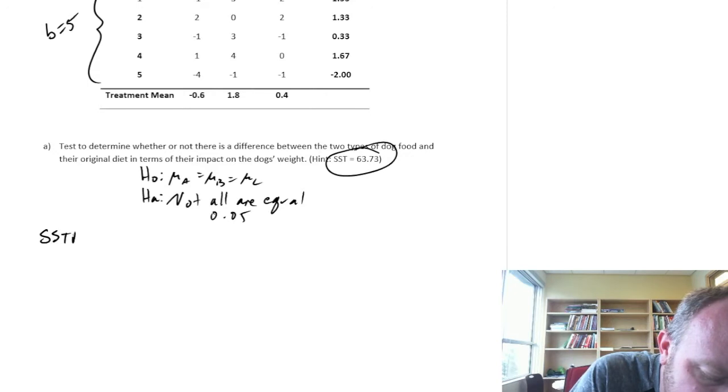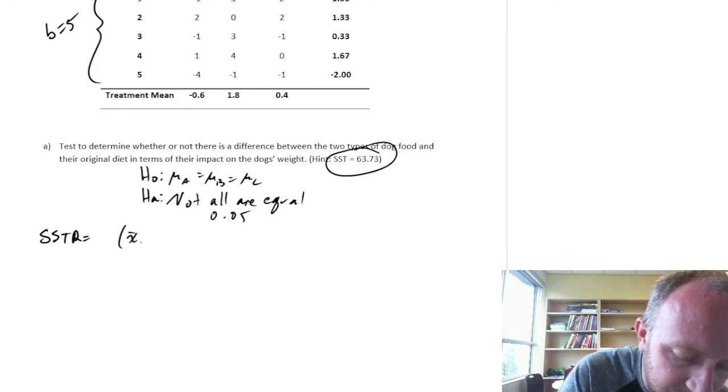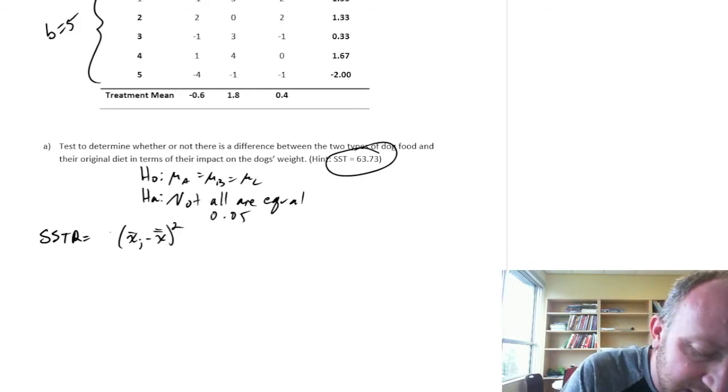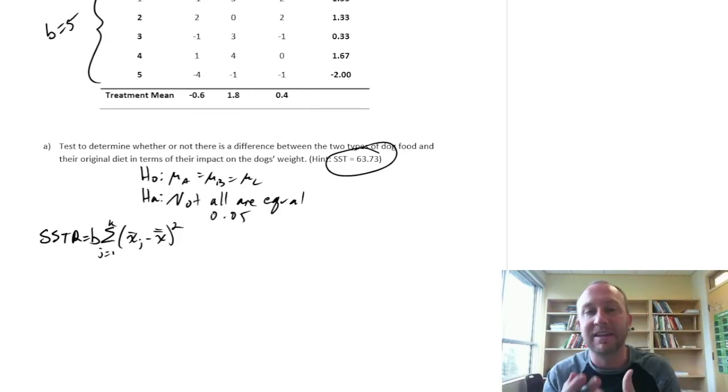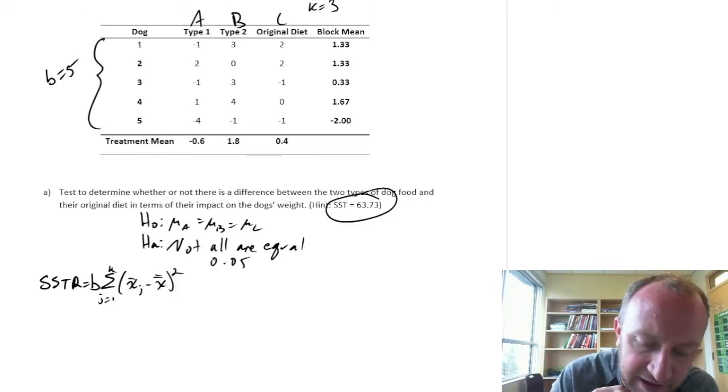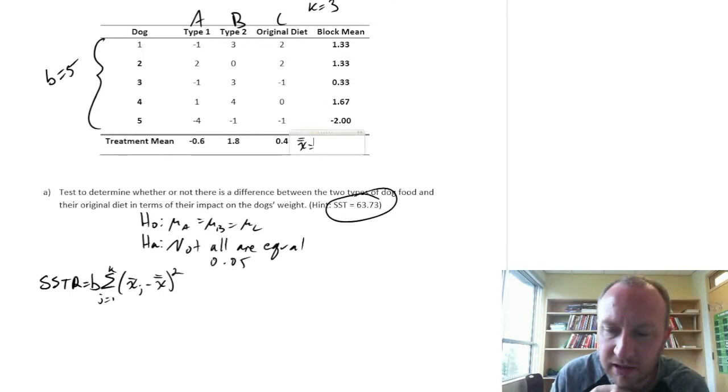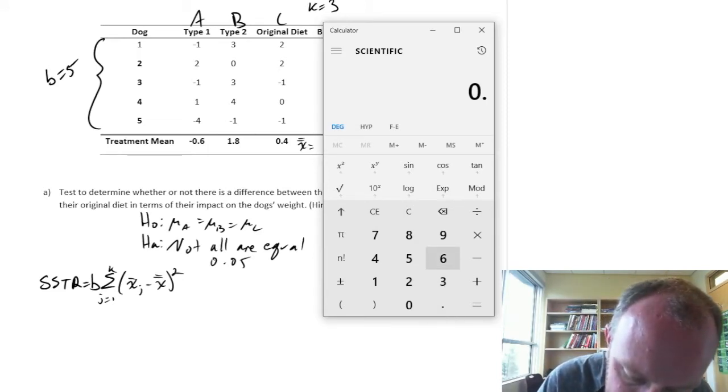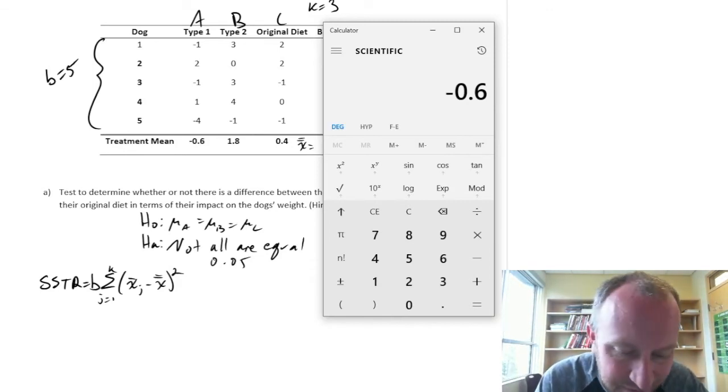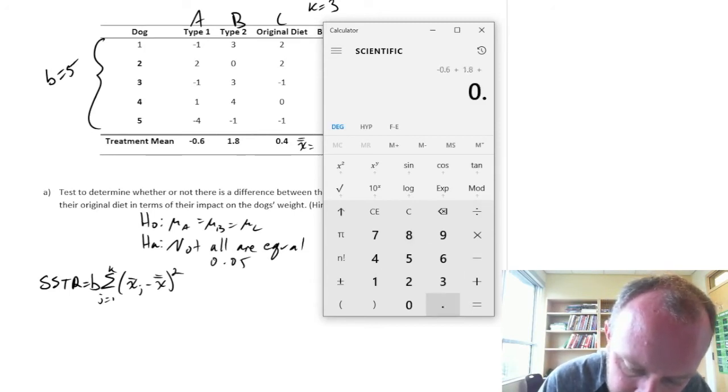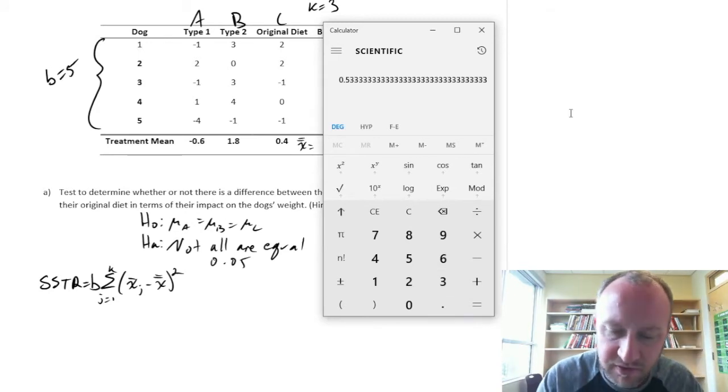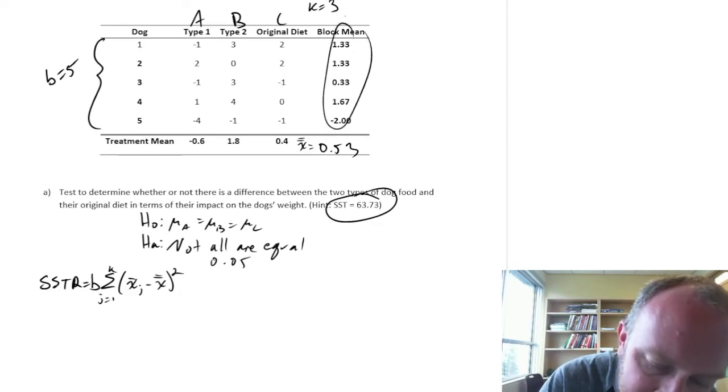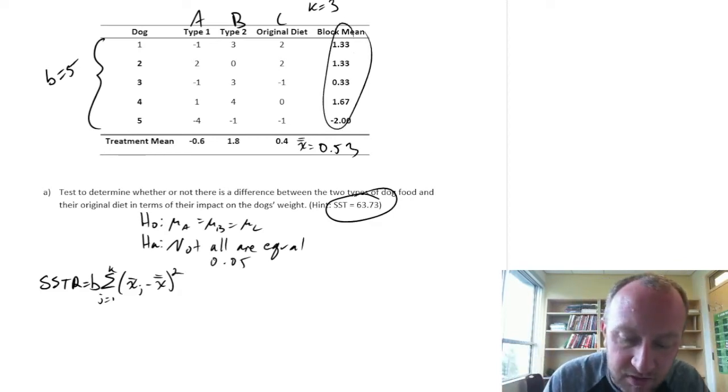So to start SSTR. So our formula here, we're looking at differences between treatment means and the grand mean, which we still don't have. We add all of those up across our treatments and we multiply it by the number of observations in each of those treatments. Let's get our grand mean. We're going to need that for many of the calculations. So our grand mean, I'll take the mean of the treatment means. You can verify that taking the mean of the block means will give exactly the same answer. But there's always fewer treatments than there are blocks. So minus 0.6 plus 1.8 plus 0.4 divided by 3. So 0.53 is our grand mean.